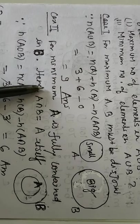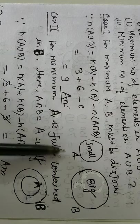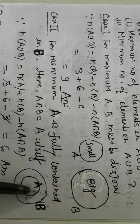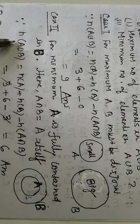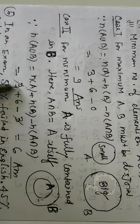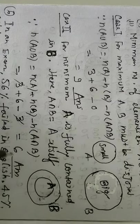Case 2, for minimum, A is fully contained in B. This is a special case because A is smaller, B is larger. And for minimum, inside B, A will go. Again, using the same formula. NA union NA plus NB minus NA intersection B. NA 3, NB 6. NA intersection B is 3 already given. So the answer is 6.